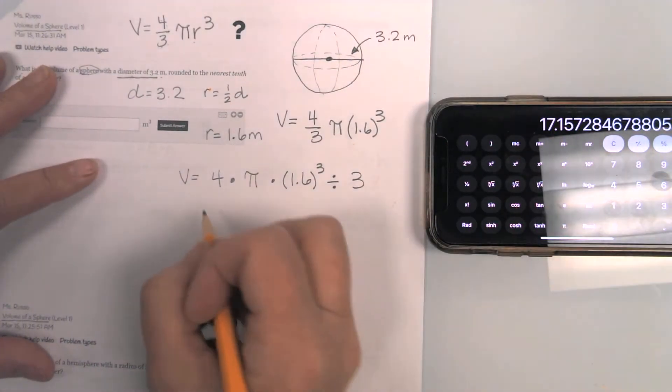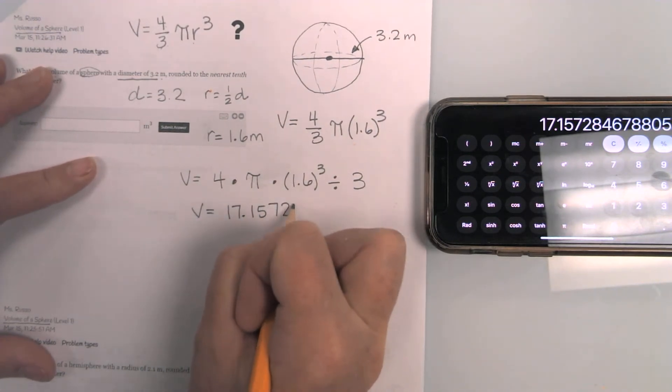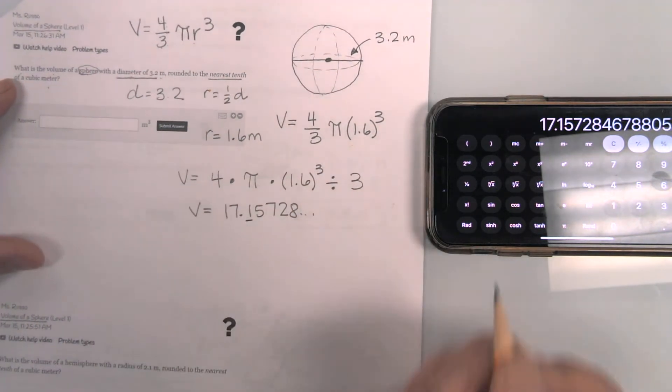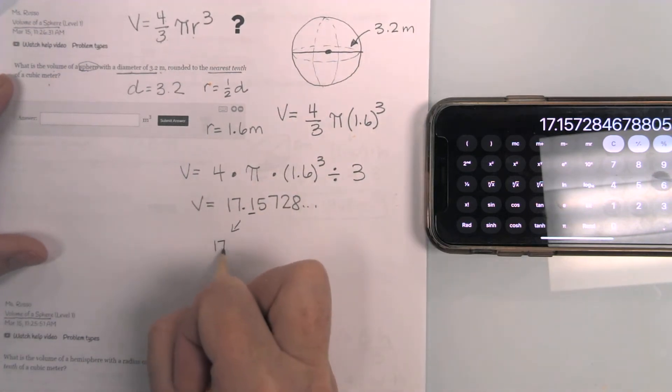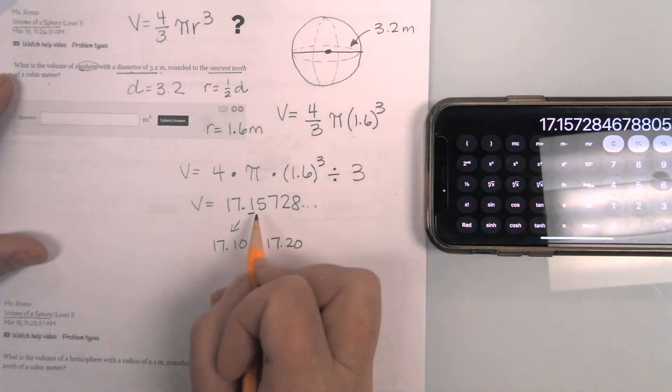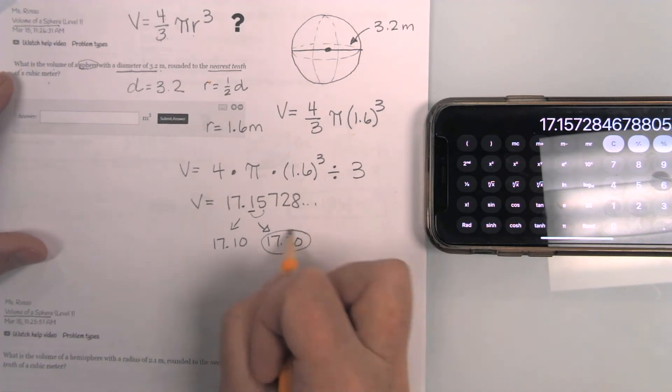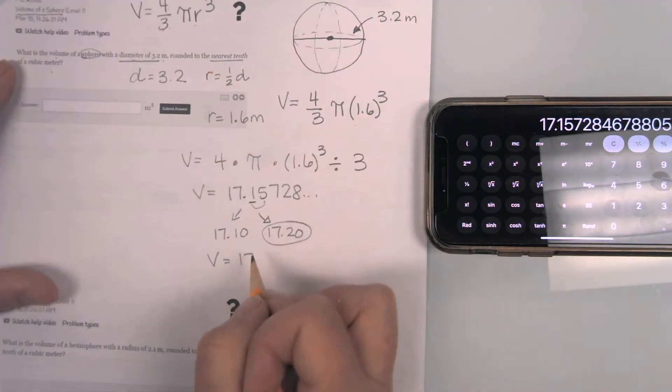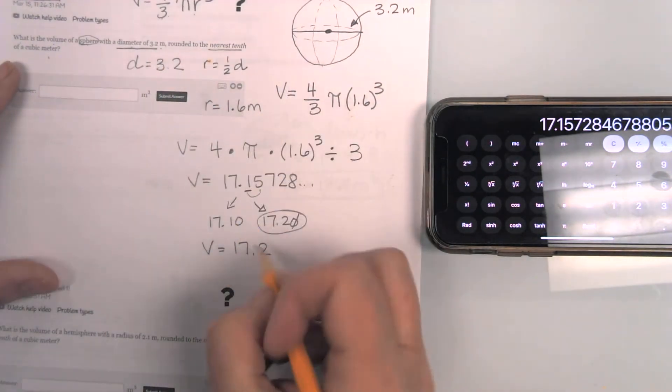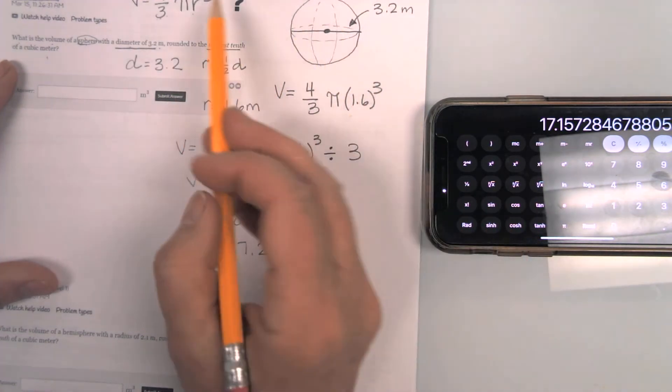So notice it is a really long number. Volume equals 17.15728, and it keeps going. We need to round to the nearest tenth, which is this number. So again, I always have to decide is this closer to 17.10 or 17.20. Since this is a 15, it is actually closer to this number. So volume equals 17.2. Remember, mathematicians, we just don't write the zero. And it is meters cubed because we cubed the radius.